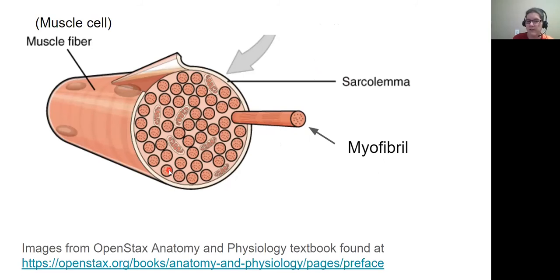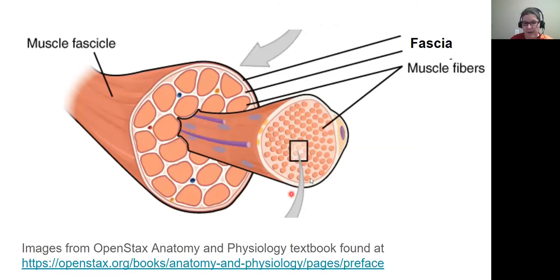If you have your single pull-and-peel Twizzler as your muscle cell, the next thing I'd ask you to do is put several of them together in a bunch and wrap them up with a little bit of Saran wrap. What you get from doing that is a muscle bundle, or muscle fascicle.